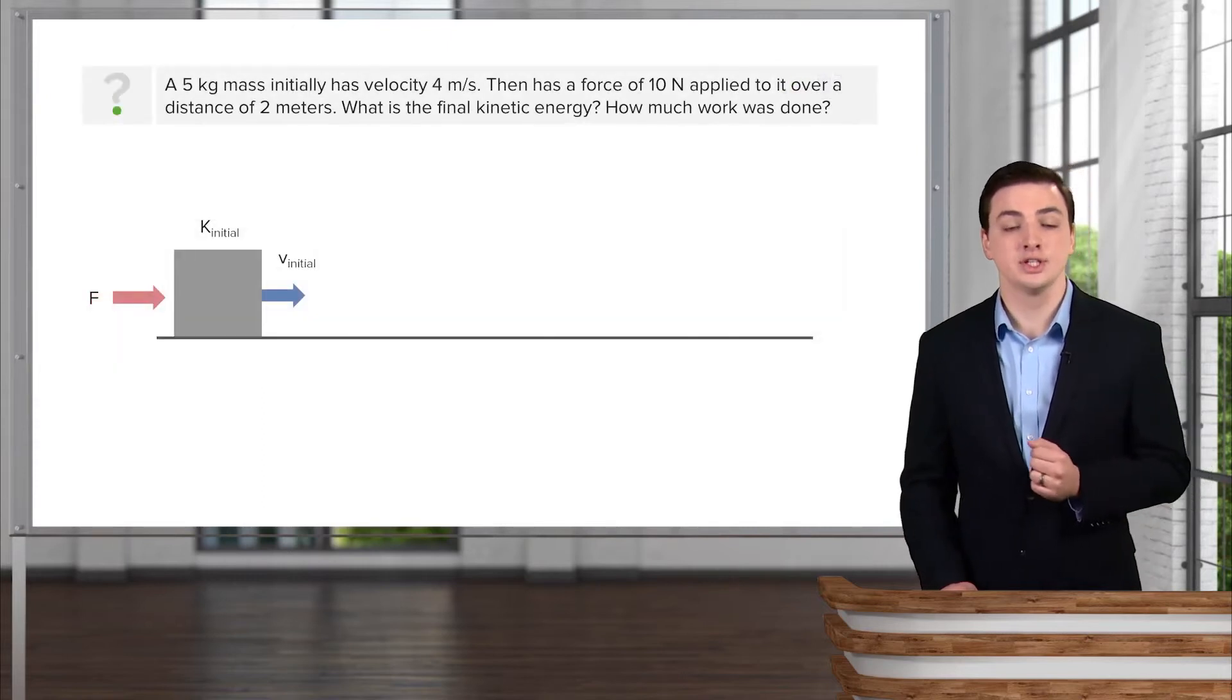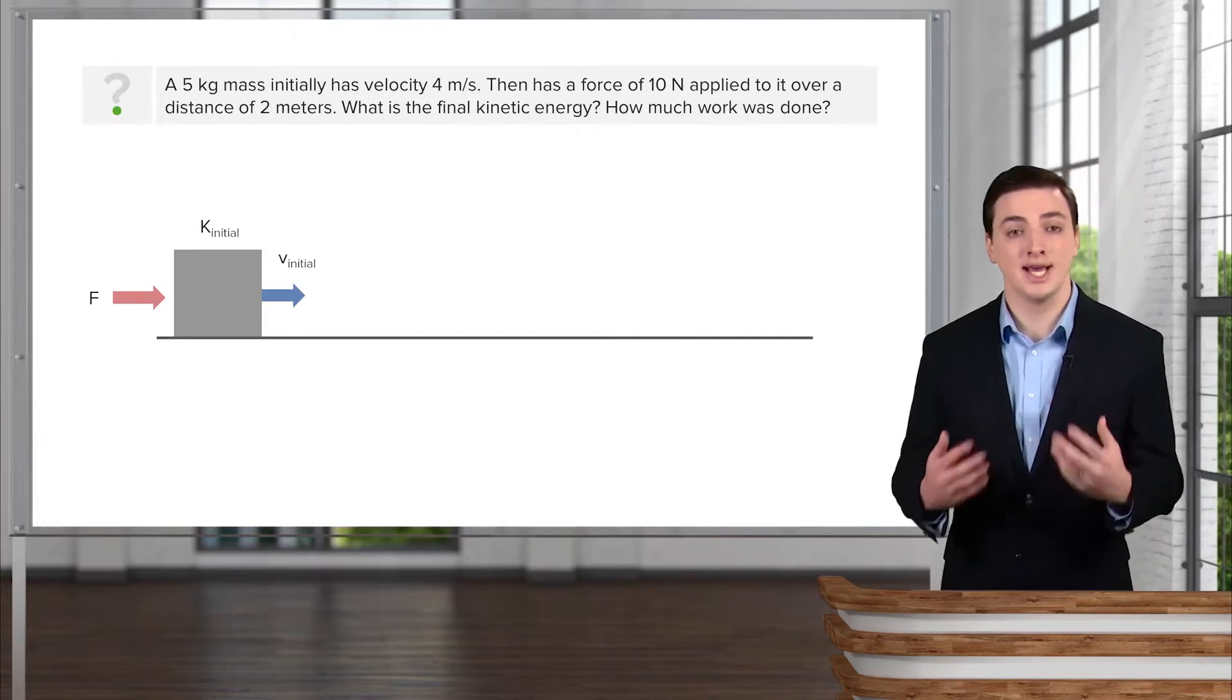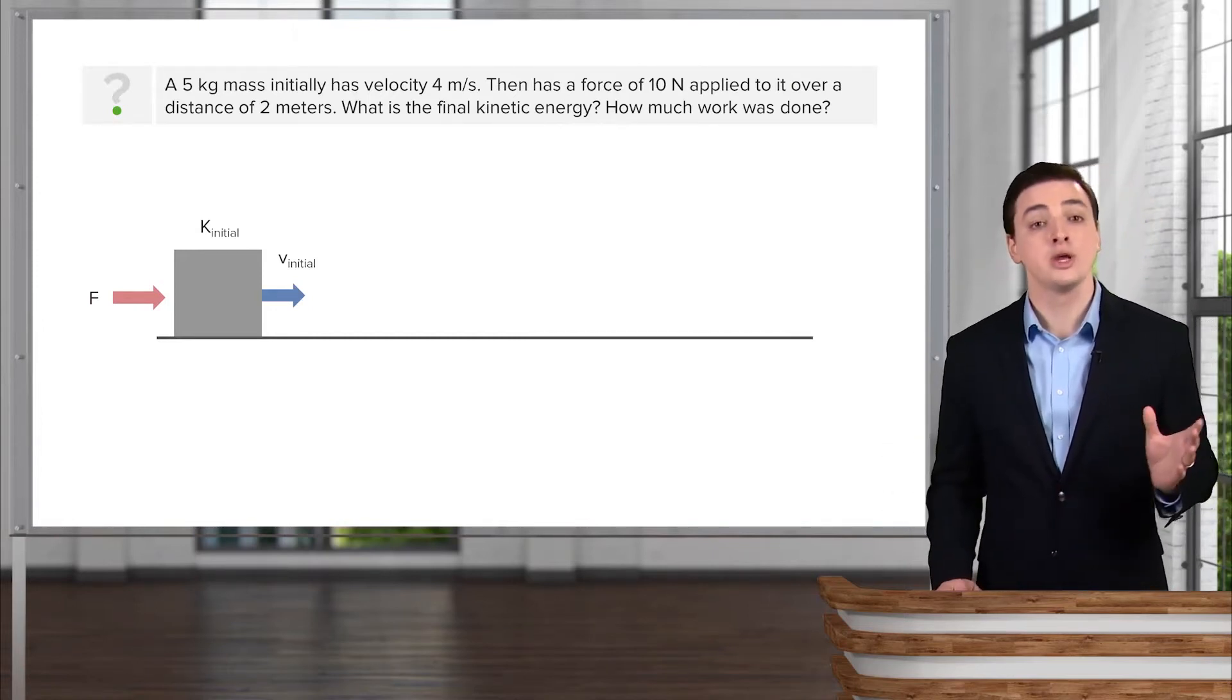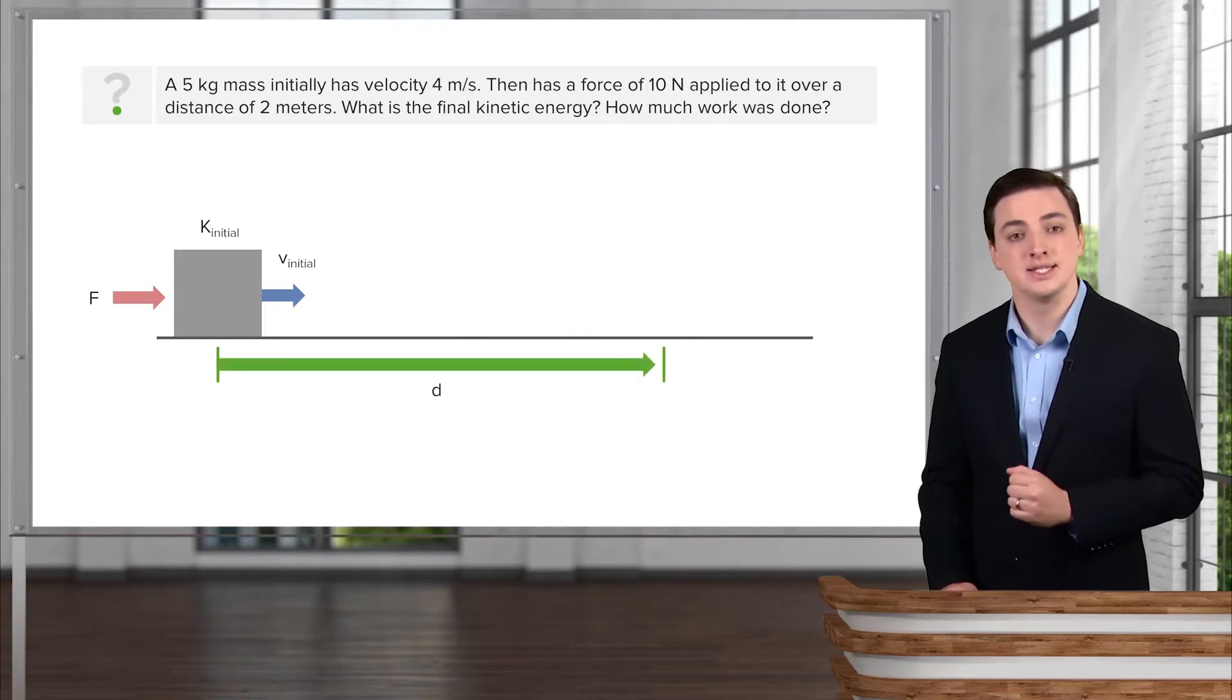Hopefully it looks something like this. You have an object that initially has some velocity, which means it has some initial kinetic energy. We apply a force to our object over some distance, in this case 2 meters.